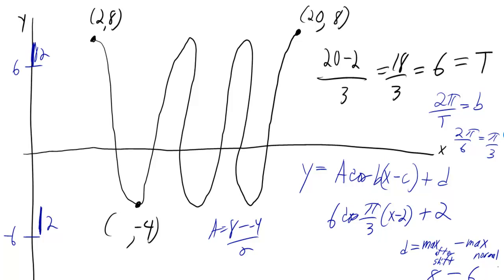And then, if I want to find the horizontal shift, well, it's just being shifted over by 2 to the right, so I have to put minus 2. The amplitude is (8 minus -4) over 2—that comes out to 6.